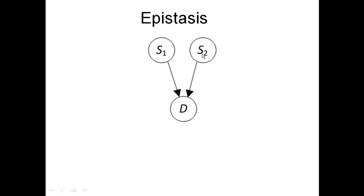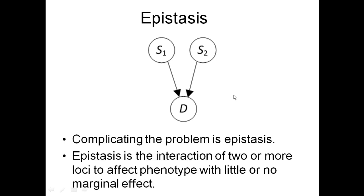Complicating the problem is epistasis — the interaction of two or more loci to affect a phenotype when there's little or no marginal effect. It has to do with one gene modifying the behavior of another gene to affect the disease. Statistically, it means two SNPs have a high correlation with the disease together, but each one individually may not have any correlation. If they have none individually, you won't find that by looking at each SNP alone — you have to look at pairs or triplets. Computation makes it infeasible to look at all combinations, so researchers have created many heuristic searches to find epistatic interactions. Our goal in the prediction problem is to locate these interactions and use them for prediction.